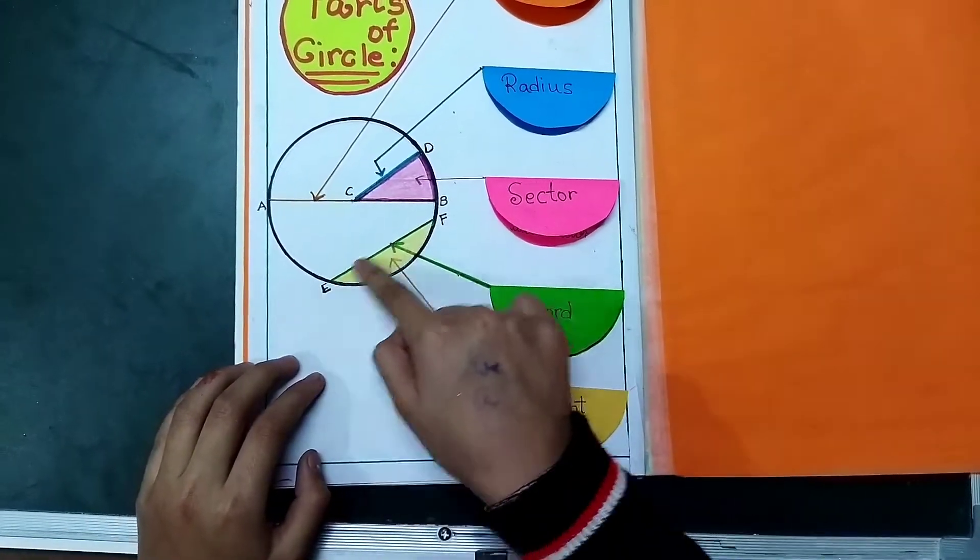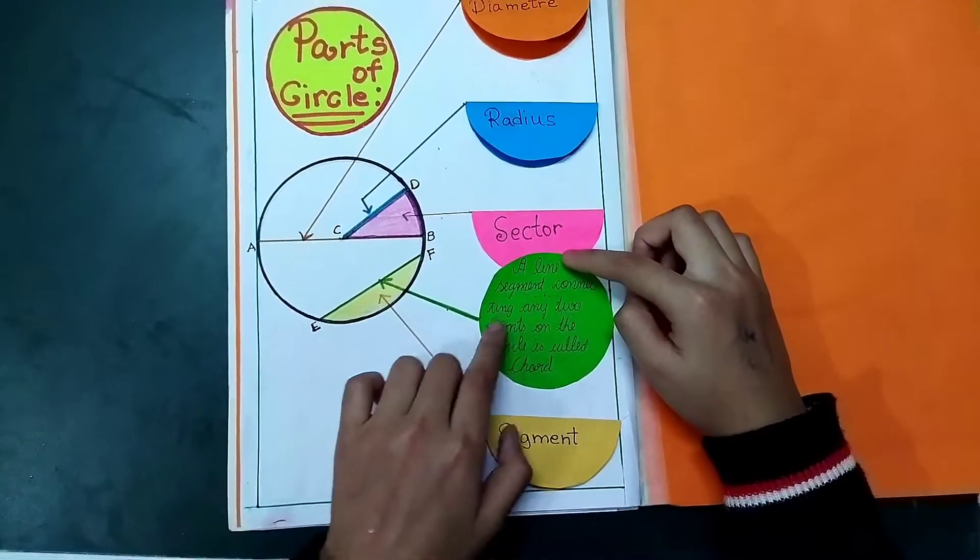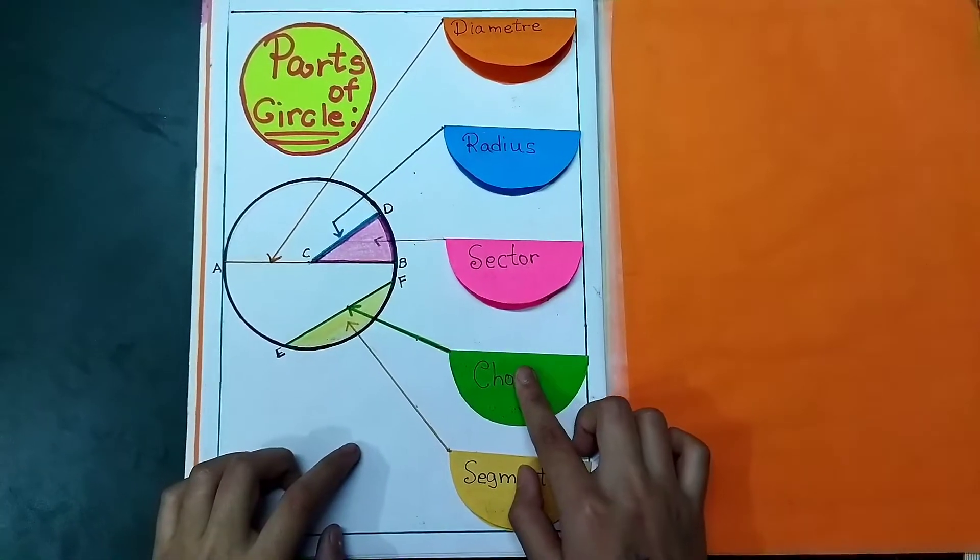Now chord. You can see this green line. This is chord. A line segment connecting any two points on the circle is called a chord. This was the definition of chord.